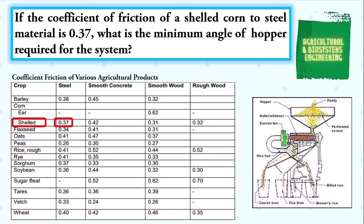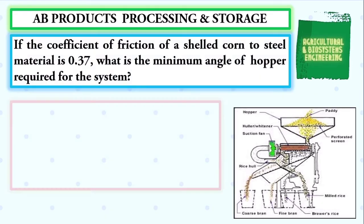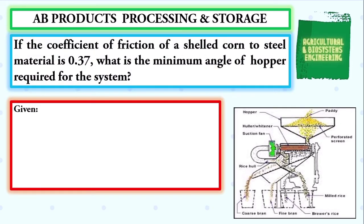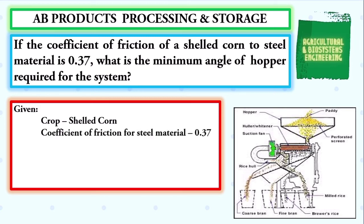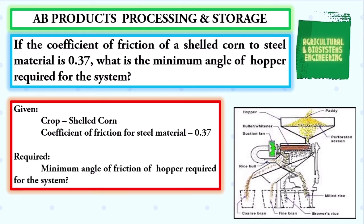Going back to our problem, let us first identify our given. We have the crop, which is the shelled corn. The material to be used is steel, with a coefficient of friction of 0.37. Note that the values for the coefficient of friction will change depending on the crop and the material required in the problem. The required is the minimum angle of friction of the hopper required for the system.